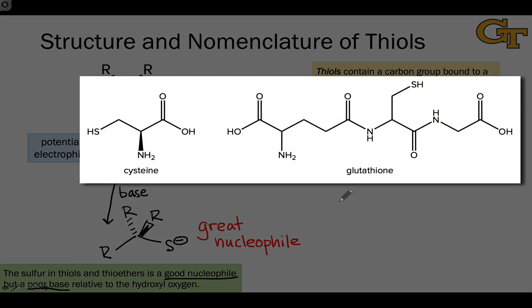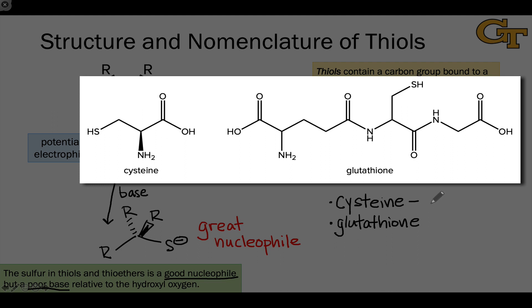We see thiols in a number of different contexts in biochemistry. The first is in the amino acid cysteine, which shows up in a wide variety of proteins and plays an active role in the active sites of a number of enzymes — in other words, it participates in the mechanism of the reaction catalyzed by those enzymes. The other place we see thiols is in the molecule glutathione, which is an important cofactor in a number of different contexts in the body. We will definitely see thiols again when we get to discussions of amino acids and proteins later in the course.